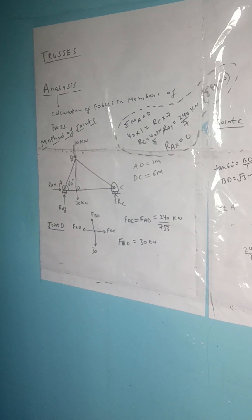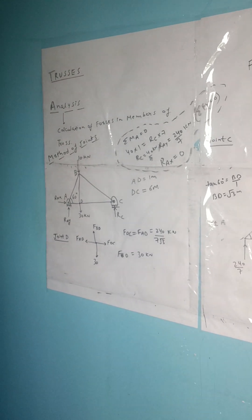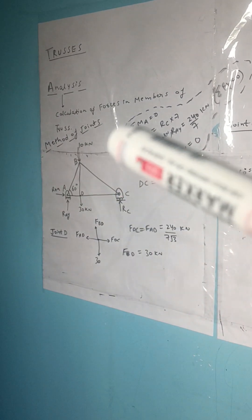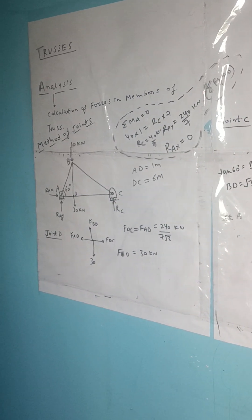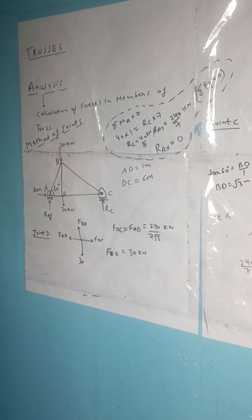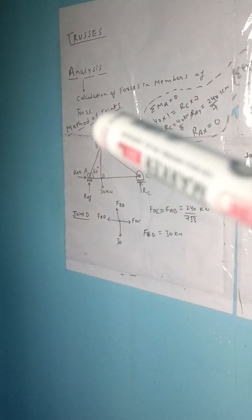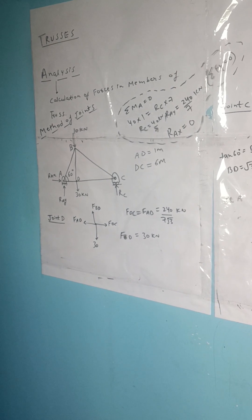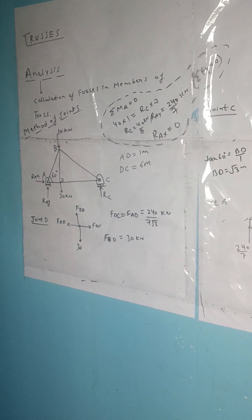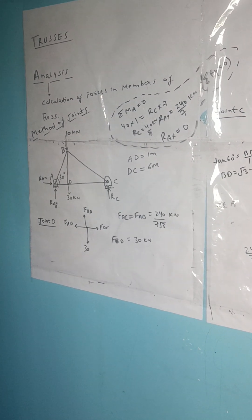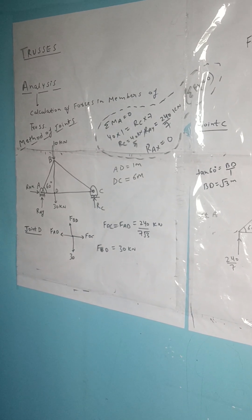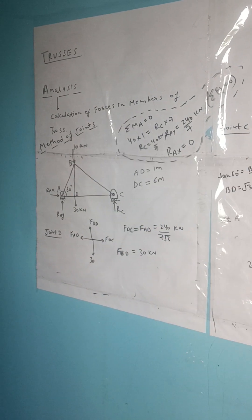Good afternoon friends. Moving ahead in the topic of truss, today I will cover the analysis — the calculation of forces in members of a truss. There are two methods: one is called the method of joints, which I will cover in this question, and the second is the method of sections. I will tell you the conditions and cases when to apply each method.